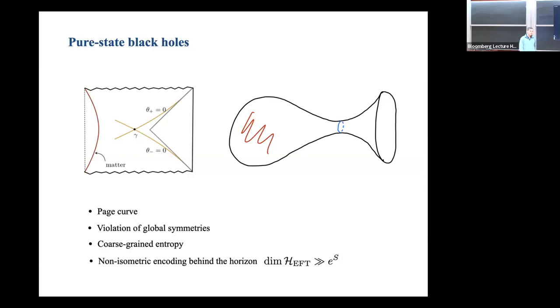Black holes like this have various general properties we expect: a Page curve, processes that violate global symmetries, a coarse-grain entropy given by the area of the minimal surface over four, and a non-isometric encoding of the physics behind the horizon in AdS/CFT. This last point is basically the statement that there are too many states in the bulk, so the mapping to the boundary has to be a lossy map.